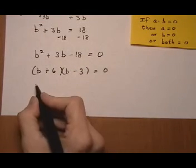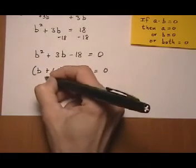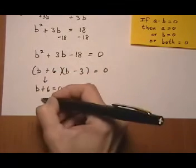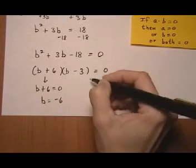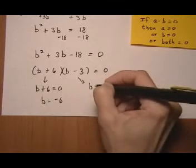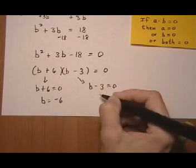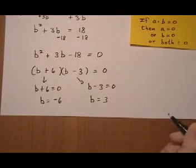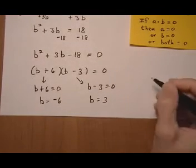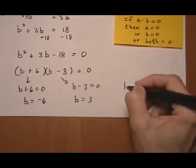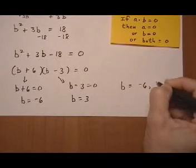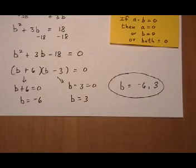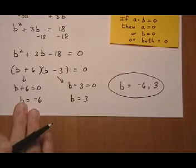Now we apply the zero factor theorem. Either b plus 6 equals zero, which means b is minus 6, or b minus 3 equals zero — add 3 to both sides — and you get b equals 3. So the solution to the quadratic equation is b equals minus 6 or 3. You'd want to plug it in to make sure it works as a final check.